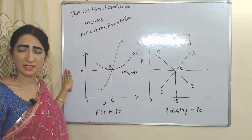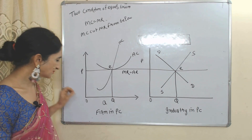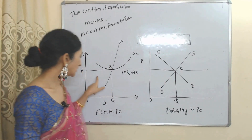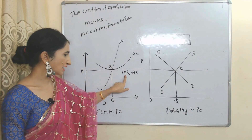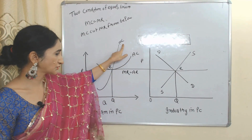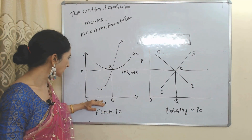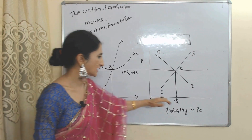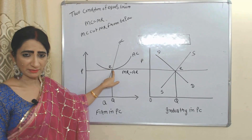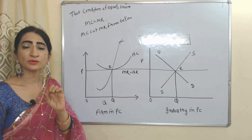Now we will see long-run equilibrium in case of perfect competition. Here we have two diagrams — one diagram represents a firm, and one represents the industry. The horizontal line represents marginal revenue and average revenue; we also have average cost, marginal cost, demand DD, and supply SS. On the x-axis we have quantities; on the y-axis we have prices. E is the equilibrium point of a firm under perfect competition.